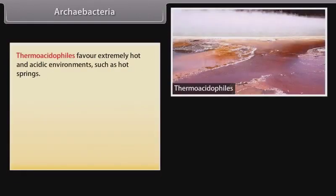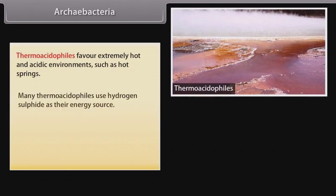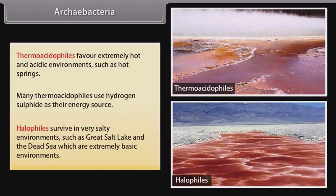Thermo-acidophiles favor extremely hot and acidic environments such as hot springs. Many thermo-acidophiles use hydrogen sulfide as their energy source. Halophiles survive in very salty environments such as the Great Salt Lake and the Dead Sea, which are extremely basic environments.